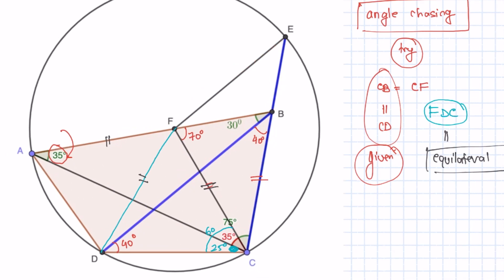Which means FE is a radius. Therefore, FE is equal to FC. Which further means that these two angles both are 40 degrees. Hence, this angle right here has to be 30 degrees.